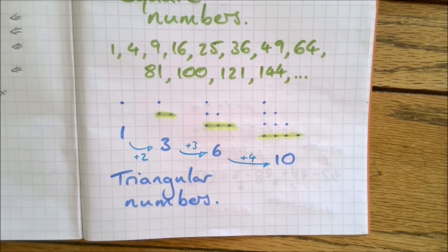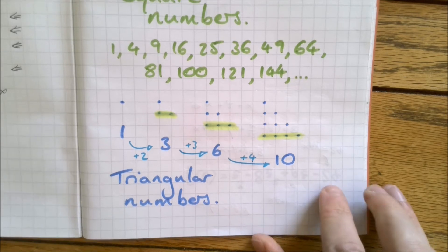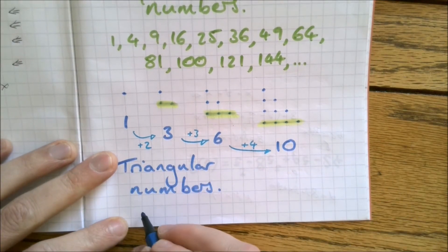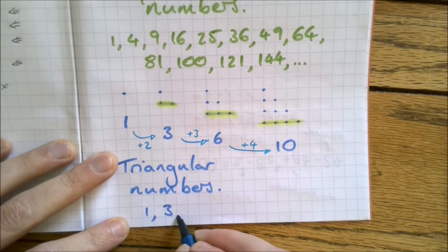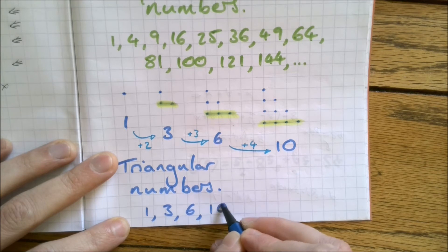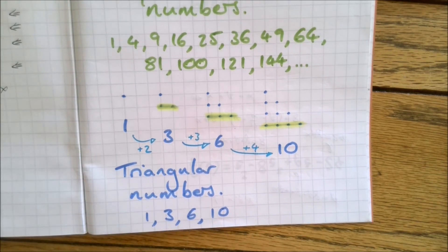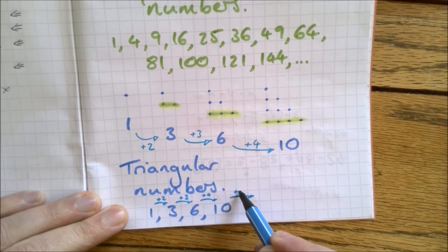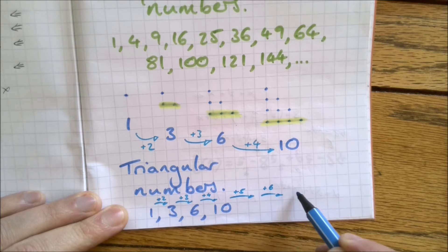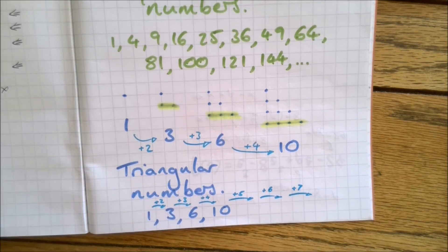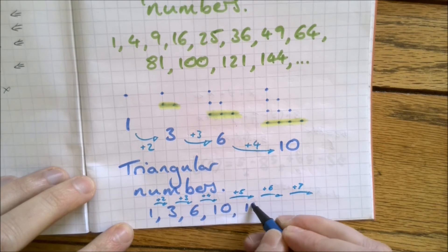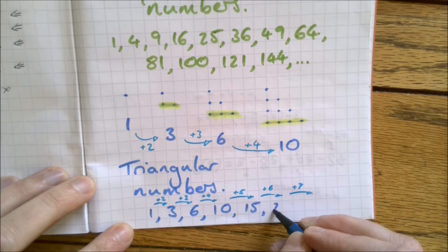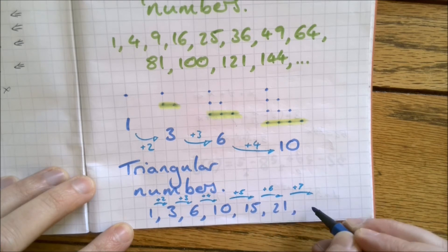And that gives us a really easy way of just listing the triangular numbers without having to draw out the pictures. So let's write out the ones that we've got: 1, 3, 6, 10. So we added on two, add three, add four. I'm going to write that down. Add two, add three, add four. So to get to the next one, you can carry on that pattern. The next one's going to be 15. The next one's going to be 21. And the next one is going to be 28.